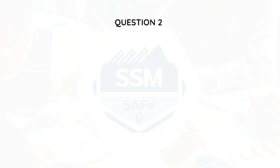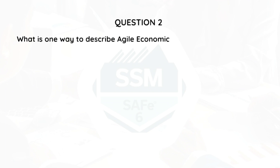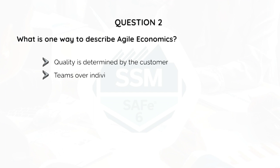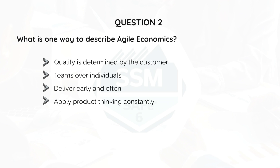Question 2. What is one way to describe Agile Economics? Quality is determined by the customer, Teams over individuals, Deliver early and often, or Apply product thinking constantly?